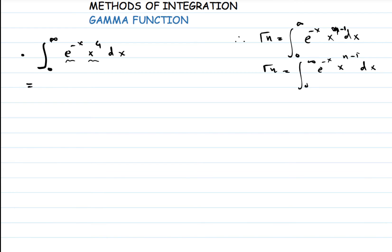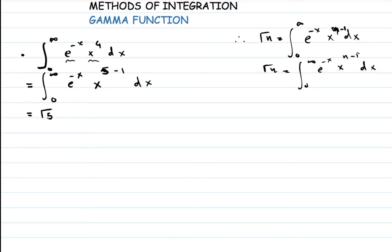We need to make our own transformations. We have the integral from 0 to infinity of e raised to minus x, and we need to express x raised to 4 in the form x raised to n minus 1. So we write it as x raised to 5 minus 1, because 5 minus 1 equals 4. This tells us the value of this function is gamma of 5, because 5 takes the place of n. By the property that gamma of n plus 1 equals n times gamma of n, which equals n factorial, this is also equal to 4 factorial.